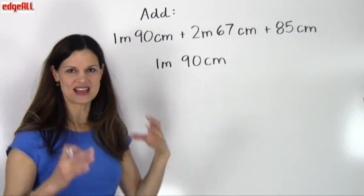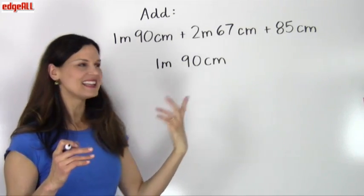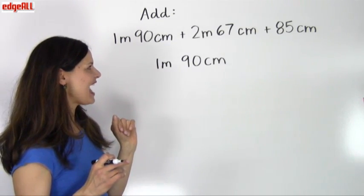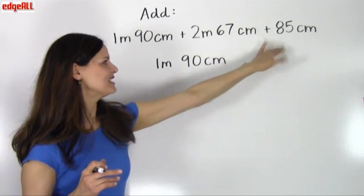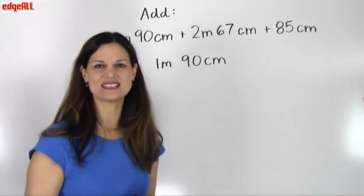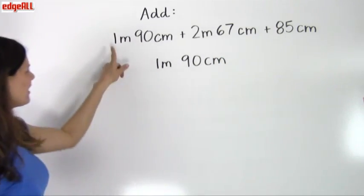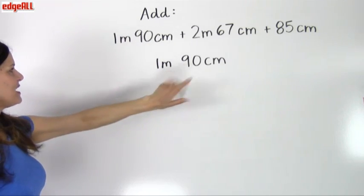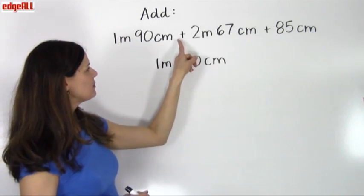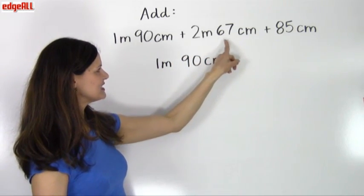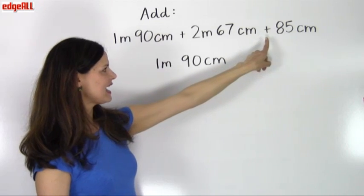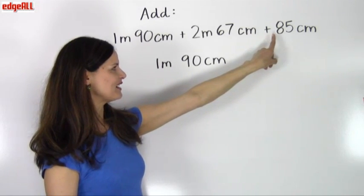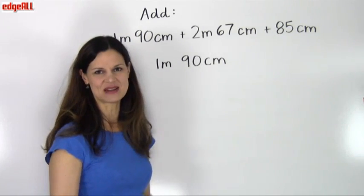That's the measurement of one object. Let's look at an example of adding together three different measurements that use some mixed units. So we are asked to add 1 meter 90 centimeters, plus 2 meters 67 centimeters, and then plus a smaller measurement of just 85 centimeters.